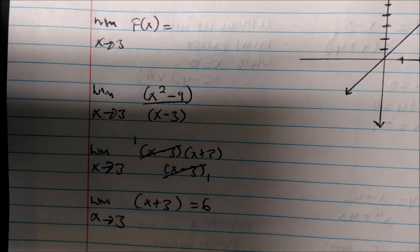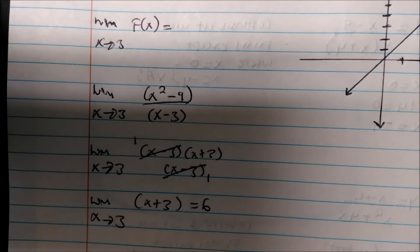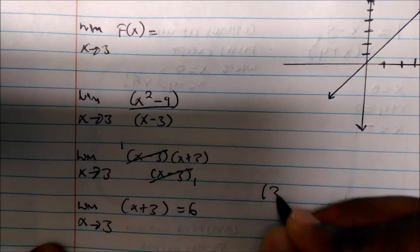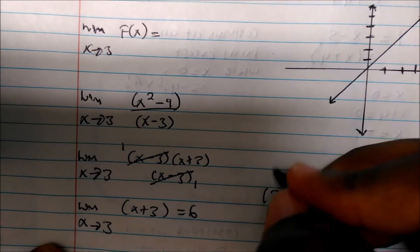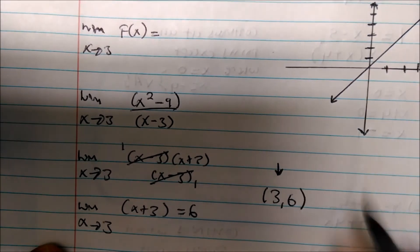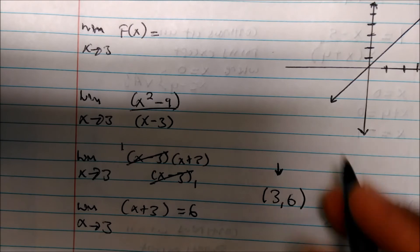So this is the part now where it's gonna make sense. We want to write the point as (3, 6), 3 being the x coordinate that we plugged in and 6 being the limit that we got.